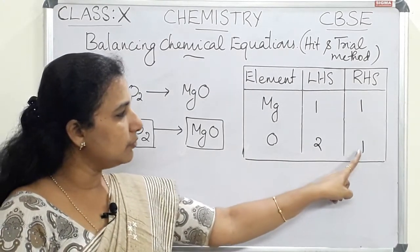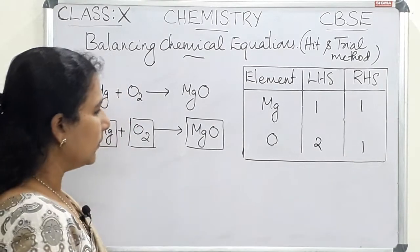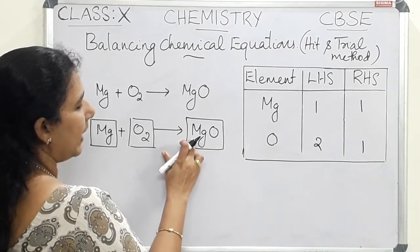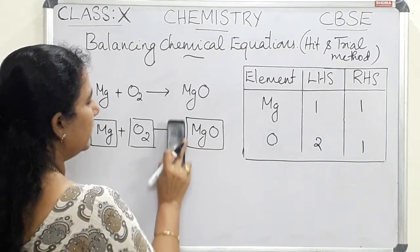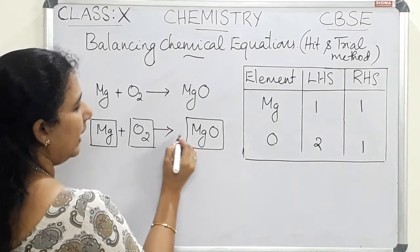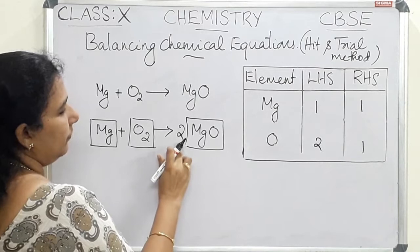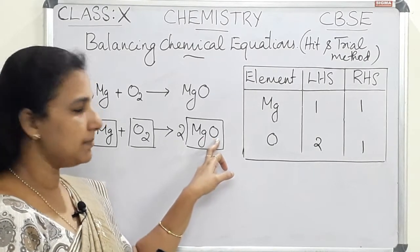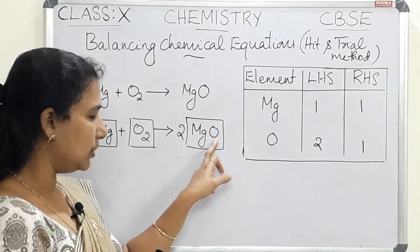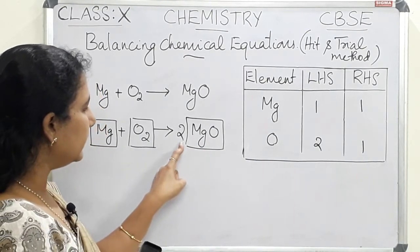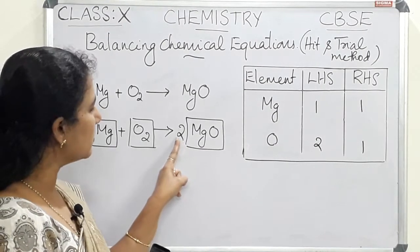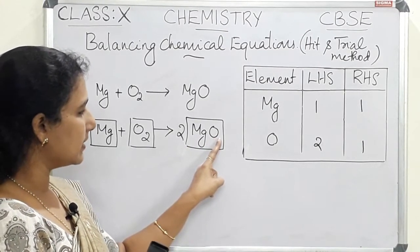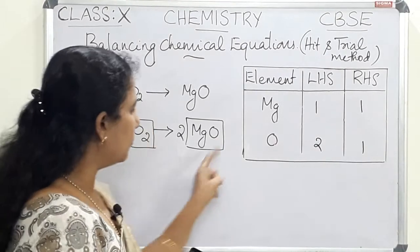In the LHS, oxygen has two atoms, so we have to make the RHS also two. To do this, we add a coefficient of 2 to magnesium oxide in the RHS. We must not change the subscript — the formula of magnesium oxide is MgO and should not be altered. Adding 2 as a coefficient means the number of oxygen atoms in the RHS becomes two.